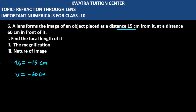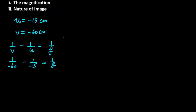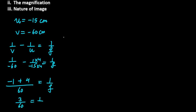To find the focal length, we use: 1/v minus 1/u equals 1/f. v is minus 60 and u is minus 15. Taking LCM as 60, the first term is minus 1 and the second term gives plus 4. So 4 minus 1 is 3 over 60, which gives us 1 over 20.